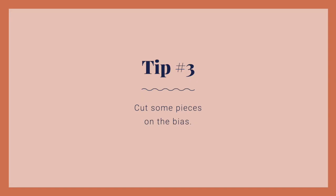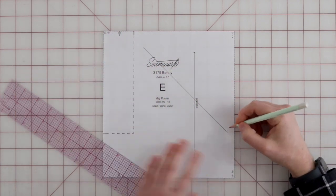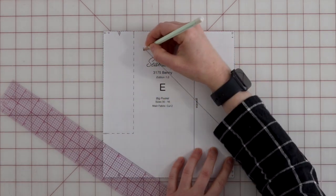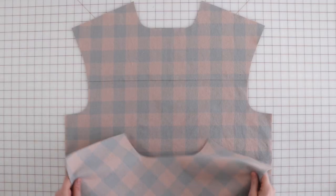Tip number three, cut some pieces on the bias. If your pattern has a lot of pieces, cutting some of them on the bias instead of straight will look awesome and save you some time. You'll notice this on lots of ready-to-wear shirts.